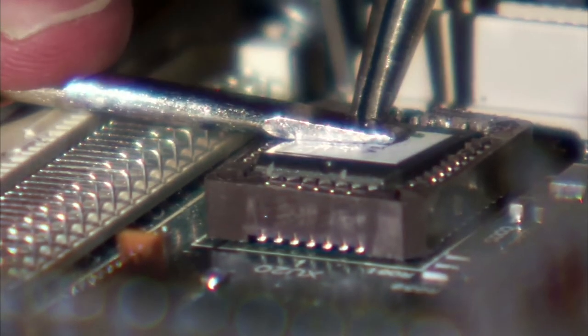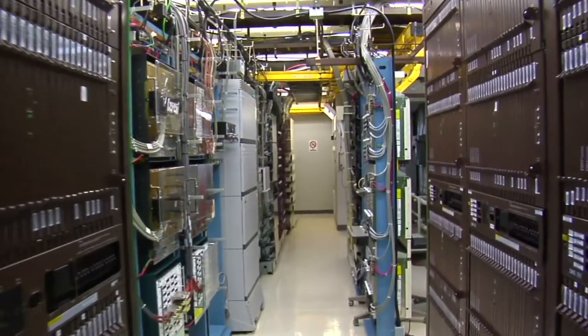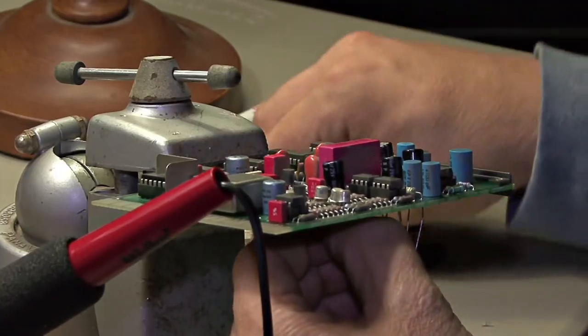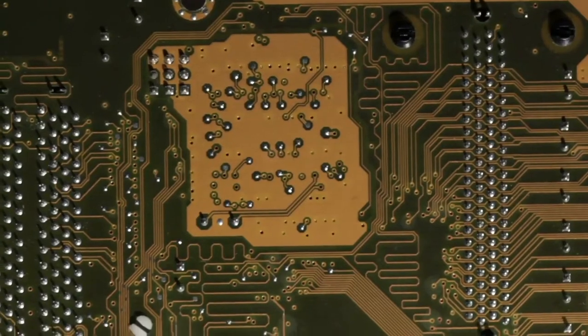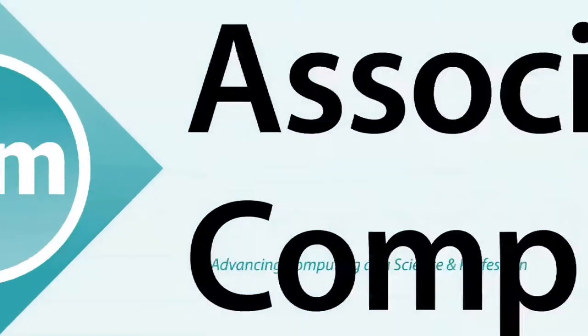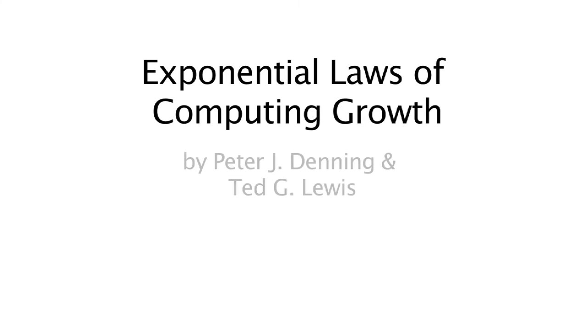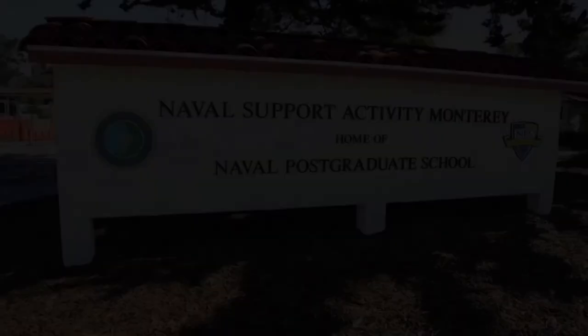Moore's Law began over 50 years ago as an empirical observation of exponential growth of chip component counts and became an industry objective. Peter Denning and Ted Lewis take a new look at Moore's Law and the causes of exponential growth, and the power of computer chips and systems and their market adoptions.